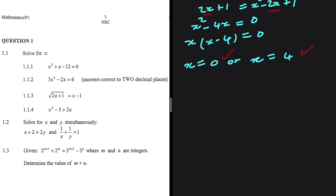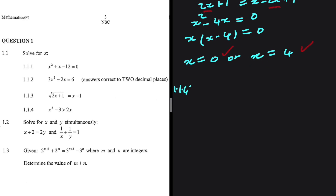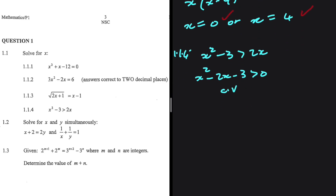For 1.1.4, we have x squared minus 3 being greater than 2x. If we take 2x to the left-hand side, we get x squared minus 2x minus 3 being greater than 0. Let's go ahead and find our critical values. We set x squared minus 2x minus 3 equals 0 — we're not changing the equation, we just want to find our critical values. After finding them, we will take care of the inequality.